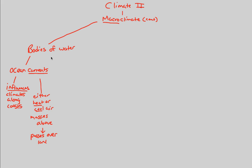An important idea behind bodies of water is a property of water itself and how it relates to temperature. Thinking back to earlier lectures on chemistry and water properties, water has a high specific heat. This is an important topic when understanding the bodies of water on Earth in relation to the macroclimate. What influence does this high specific heat have on the weather and macroclimate that we observe?